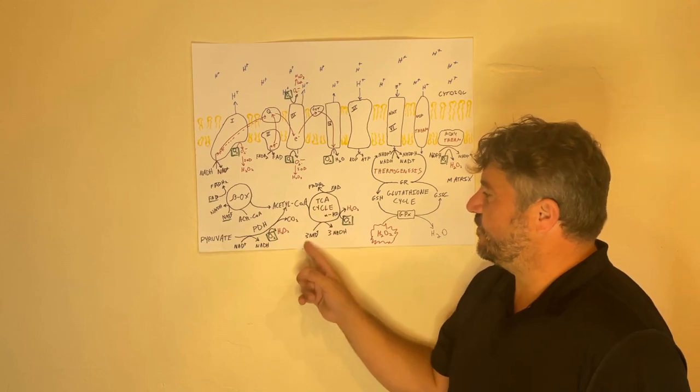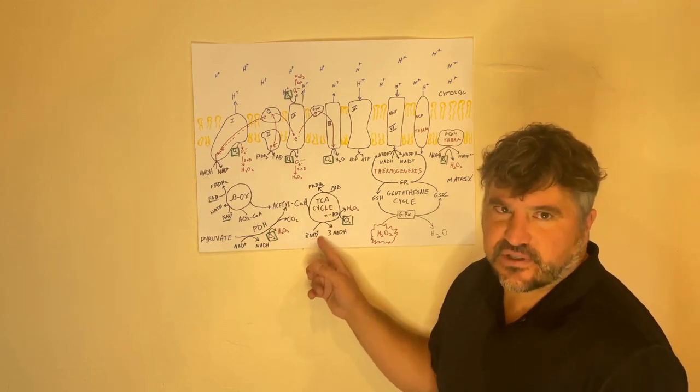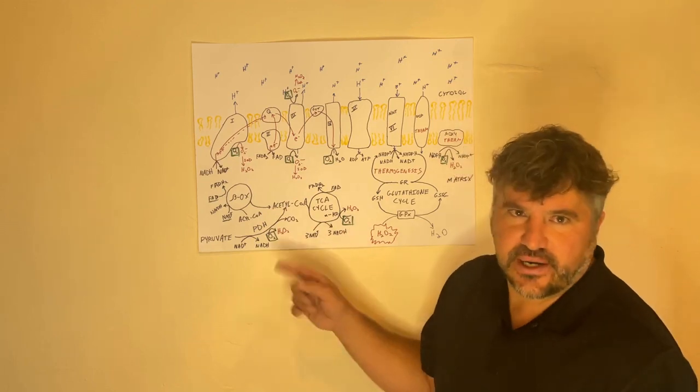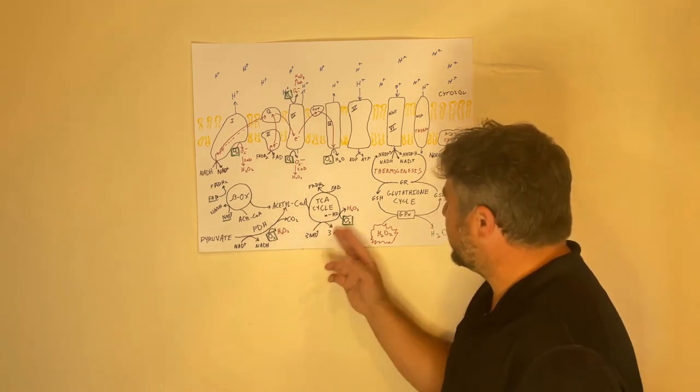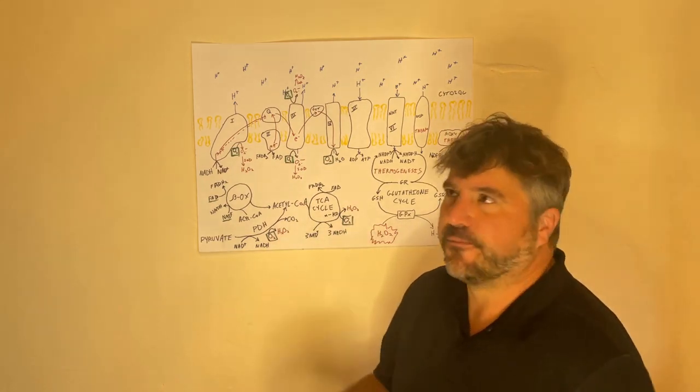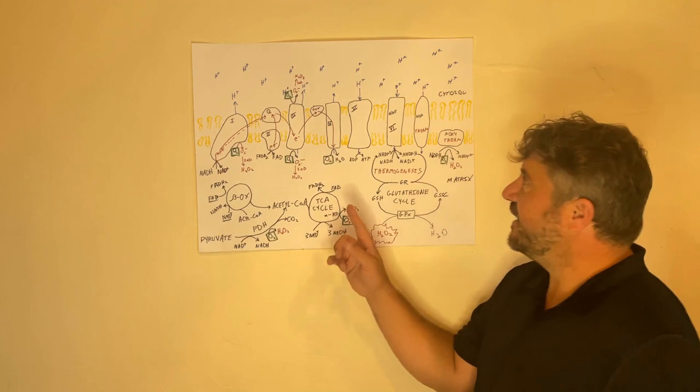Those electrons from the acetyl CoA are transferred to a molecule called NAD plus, which is an electron carrier, and that becomes NADH. Those extra electrons are carried essentially with that H. So NADH is where the electrons from your food flow to.